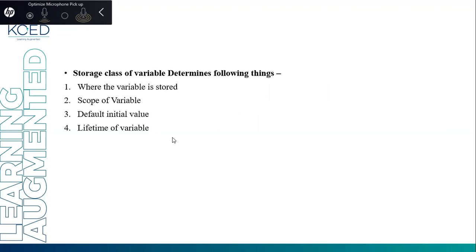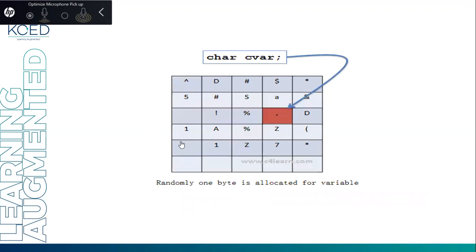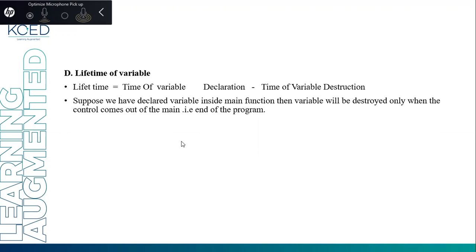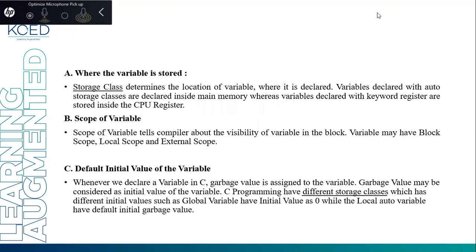These four are the important parameters: where the variable is stored — memory or register; scope of the variable — local or global; default initial value — garbage or zero; and lifetime of the variable. These are the four important properties. In the forthcoming video, we are going to discuss each of the storage classes one by one. Thanks for watching.